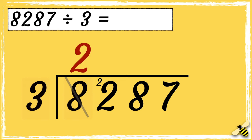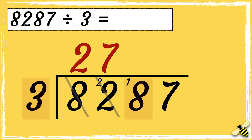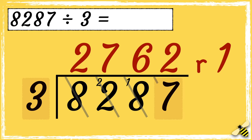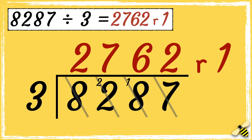How many threes go into 8? Three goes into 8 twice with 2 left over. How many threes go into 22? Three goes into 22 seven times with 1 left over. How many threes go into 18? Three goes into 18 six times. Then how many threes go into 7? Three goes into 7 twice with 1 left over, so 1 is our remainder. The answer is 2762 with a remainder of 1.